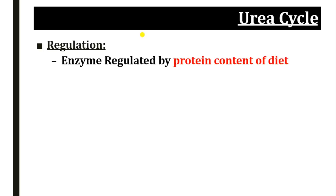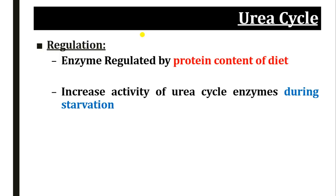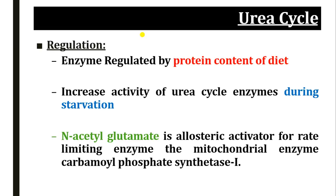Regarding regulation: the enzymes of the urea cycle are regulated by the protein content of the diet. If you take more protein in the diet, the urea cycle operates faster. Increased activity of urea cycle enzymes is also found during starvation, to cope with the protein catabolism that occurs during starvation. N-acetylglutamate is an allosteric activator of the rate-limiting enzyme of this pathway, carbamoyl phosphate synthetase 1, and increases the activity of this enzyme, though the exact mechanism is not yet fully clear.